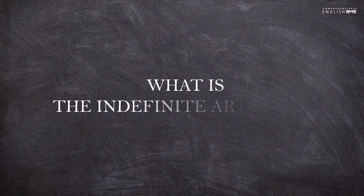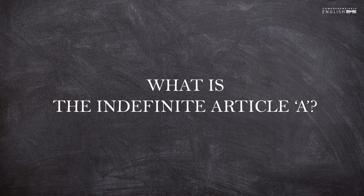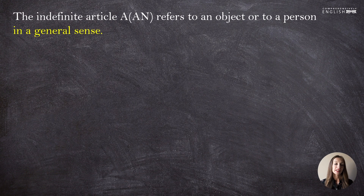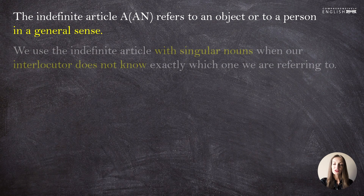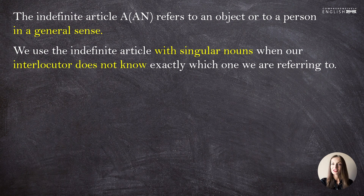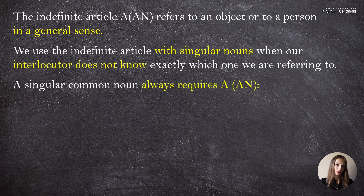What is the indefinite article 'a'? When do we use it? The indefinite article 'a' or 'an' refers to an object or to a person in general. We use the indefinite article with singular nouns when our interlocutor doesn't know exactly which one we are talking about. A singular common noun always requires 'a' or 'an'.